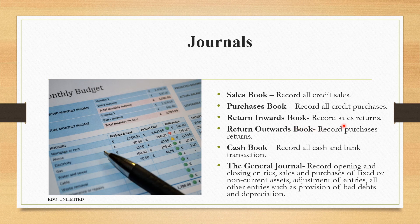In the return inwards book, we record all sales returns — if any customer returned goods to us, we record it here. The return outwards book is linked to the purchases book; any items we return to our supplier are recorded as purchases returns in the return outwards book. The cash book is the first place we record all cash and bank transactions, making it a journal rather than a ledger.